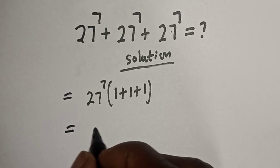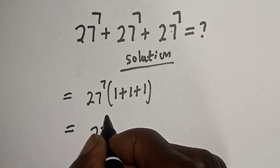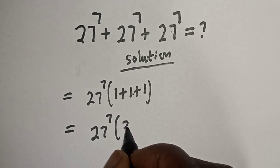This is equal to 27 raised to power 7 bracket 1 plus 1 plus 1, which equals 3.